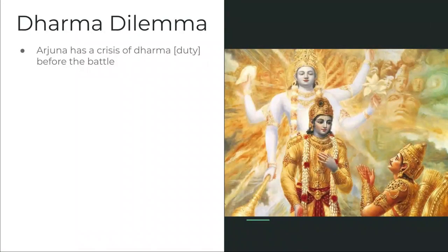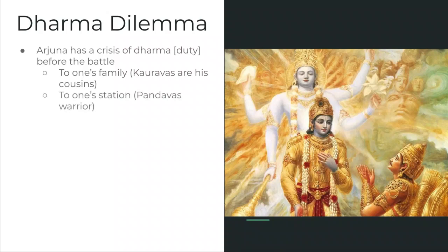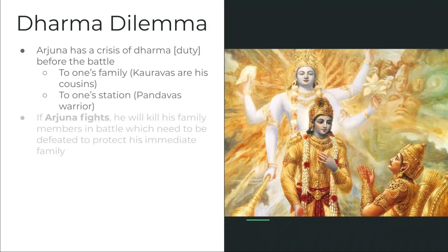Arjuna is having a crisis of dharma — of duty — before this battle. This is meant to be analogous to any moral dilemma one might have. Even though we might not identify with his particular dilemma, we are often torn between different obligations and have trouble figuring out what the right thing for us to do is. Arjuna's split is between his family — the Kauravas are his cousins — but he's also obligated to his station, his place in the caste as a Pandavas warrior.